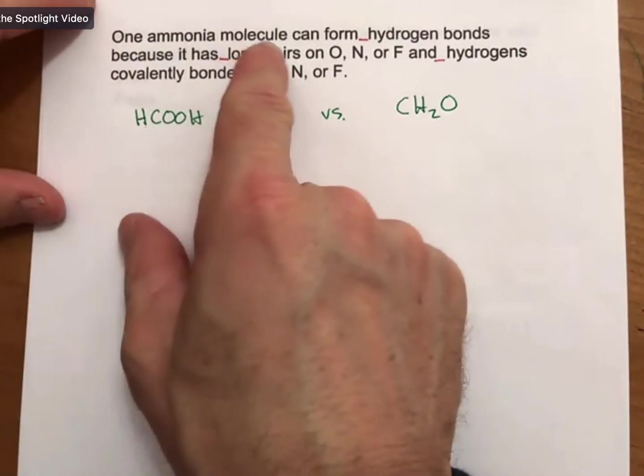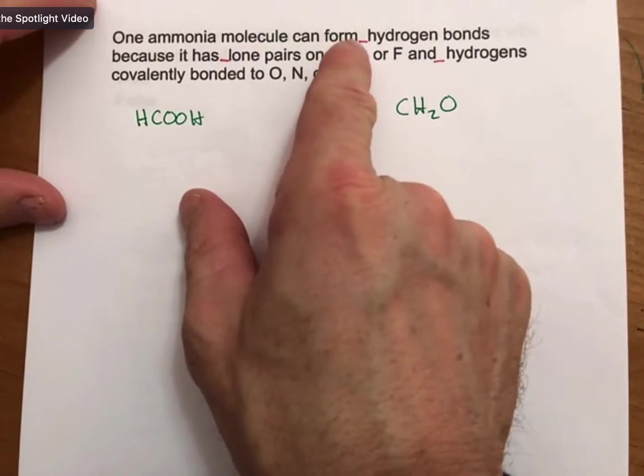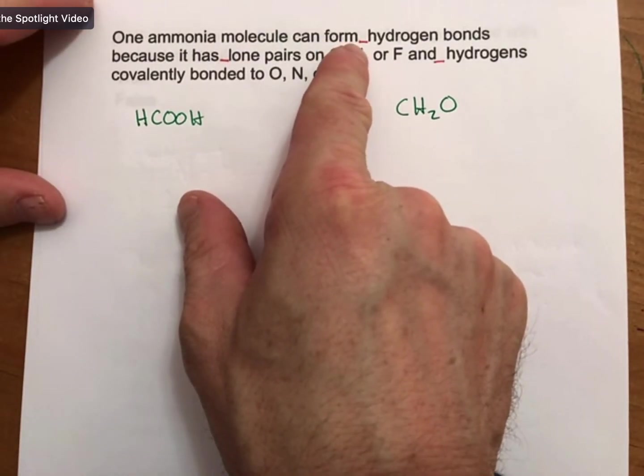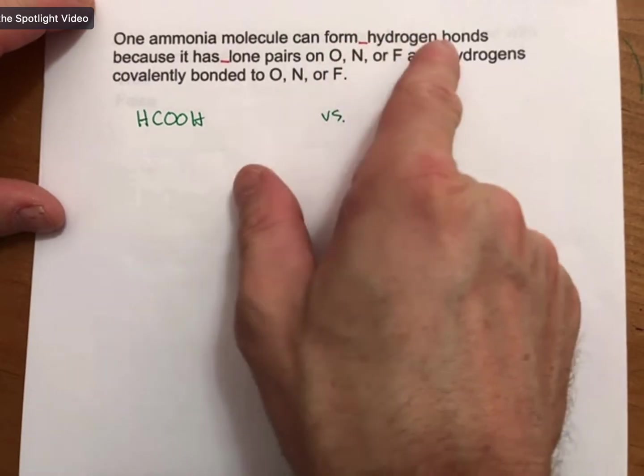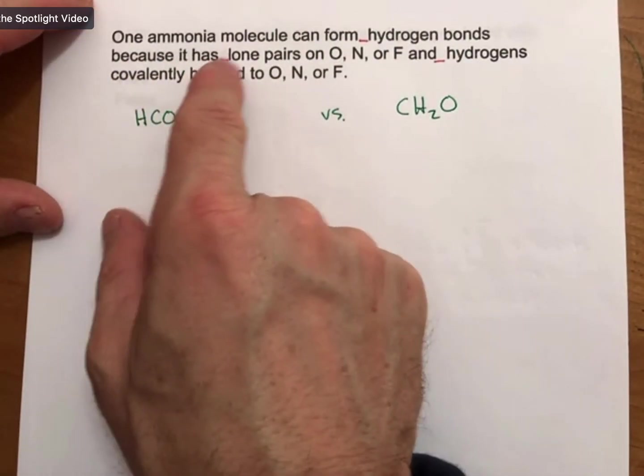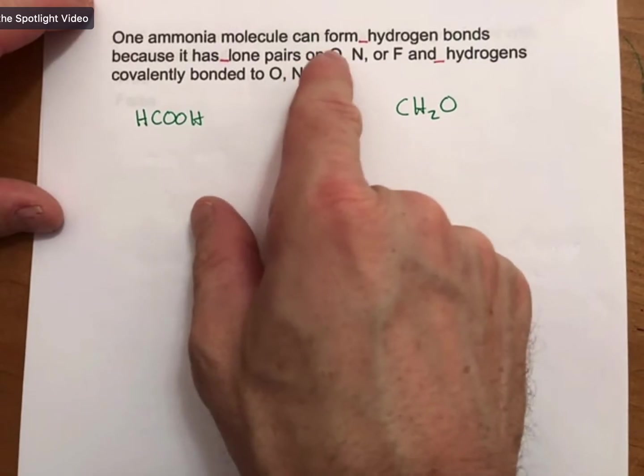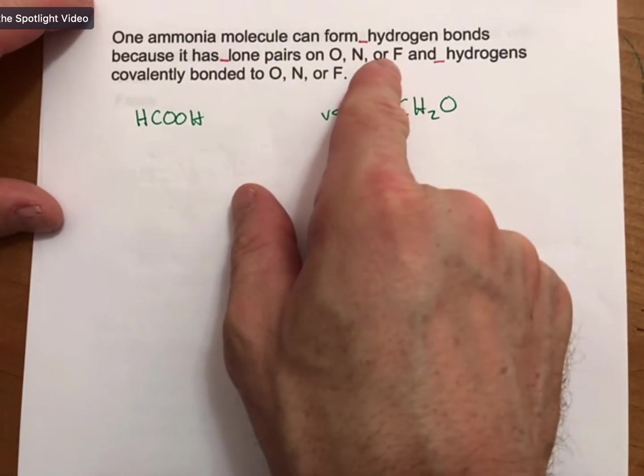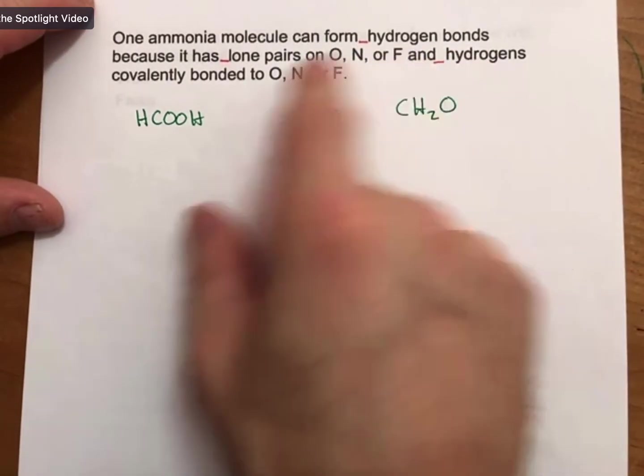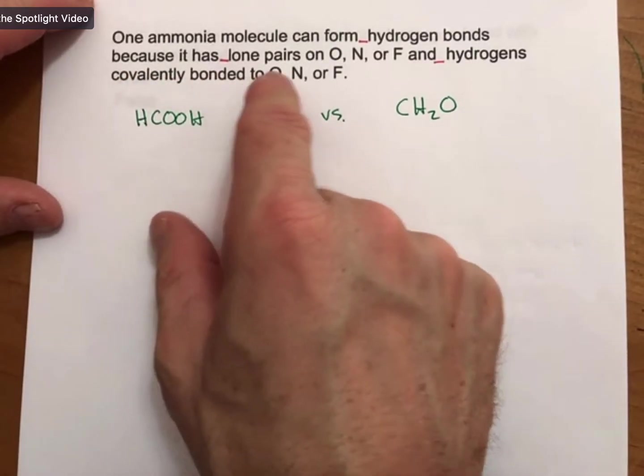It says one ammonia molecule can form, and when I cut and paste this from the homework, it didn't include the blanks. Blank hydrogen bonds because it has blank lone pairs on oxygen, nitrogen, or fluorine, and blank hydrogens covalently bonded to O, N, or F.